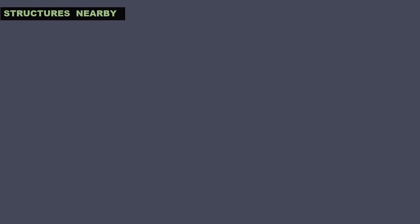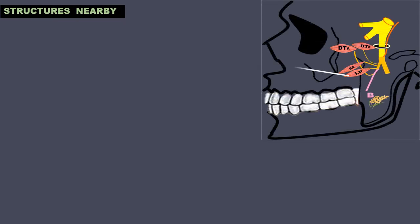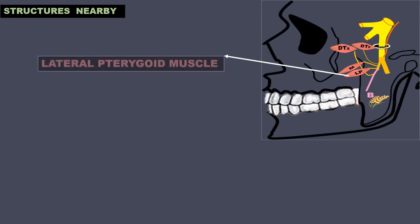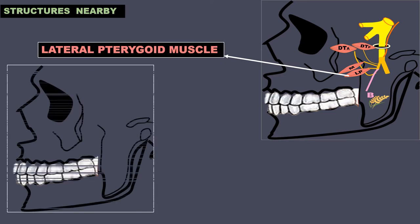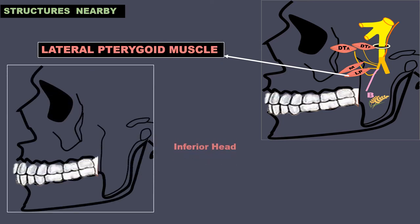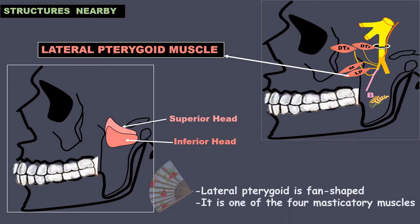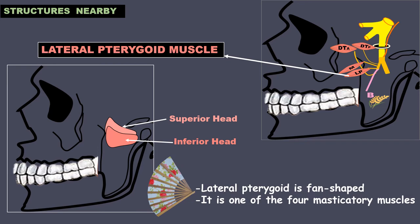Another important structure in close proximity to the branches of the mandibular nerve is the lateral pterygoid muscle. It is made up of an inferior head and a superior head. The lateral pterygoid is a fan-shaped muscle and is one of the four masticatory muscles.